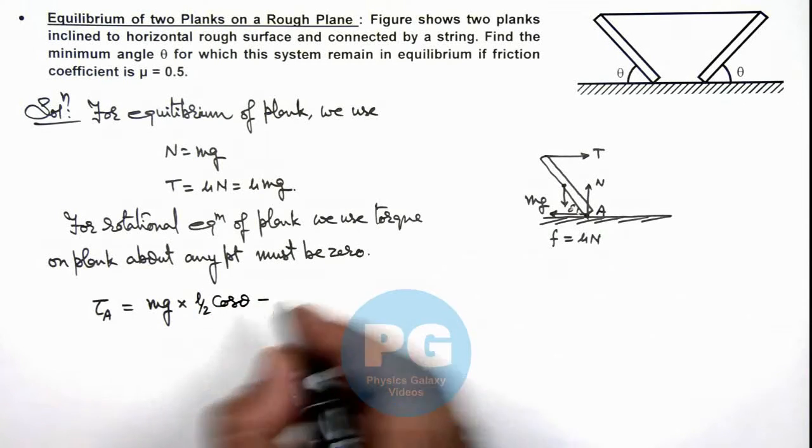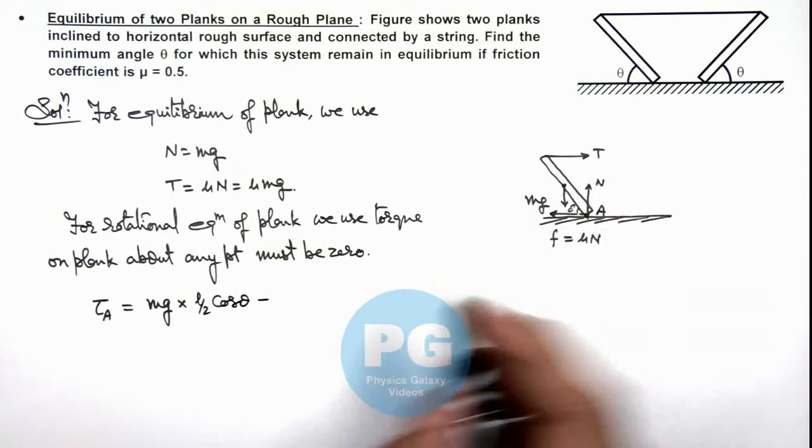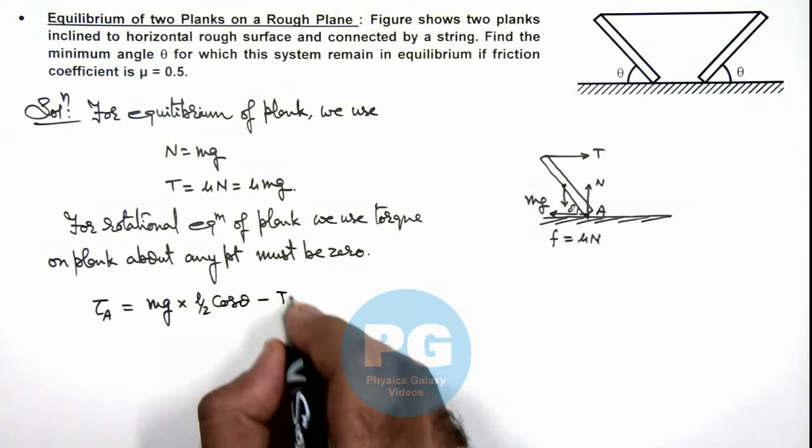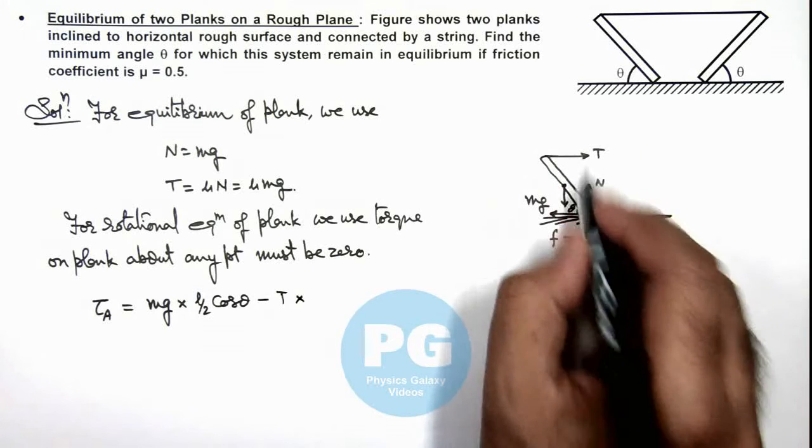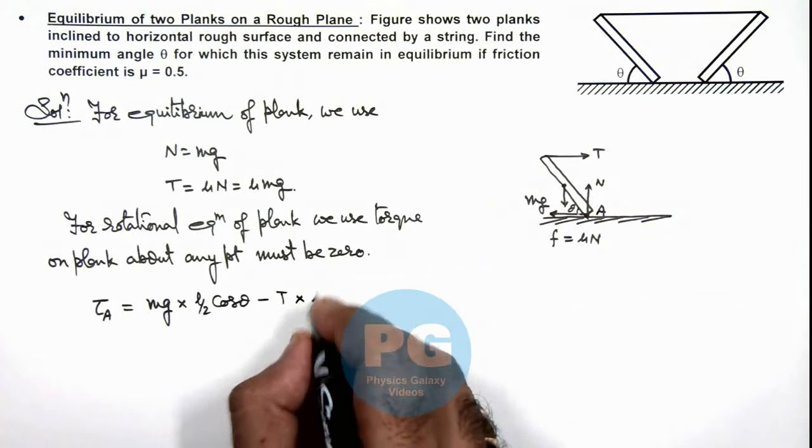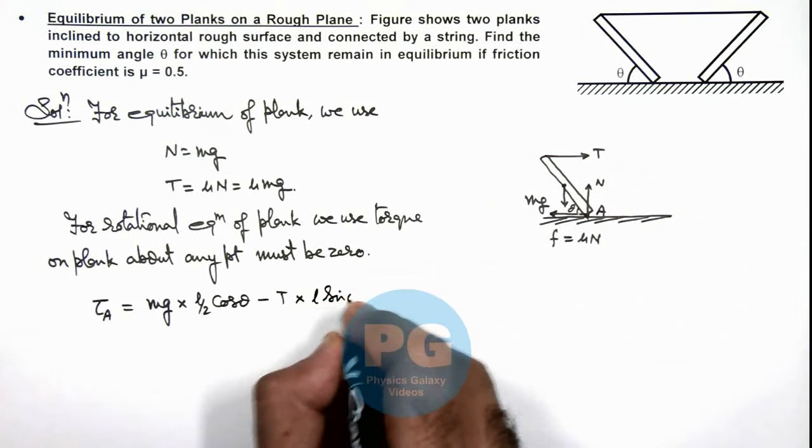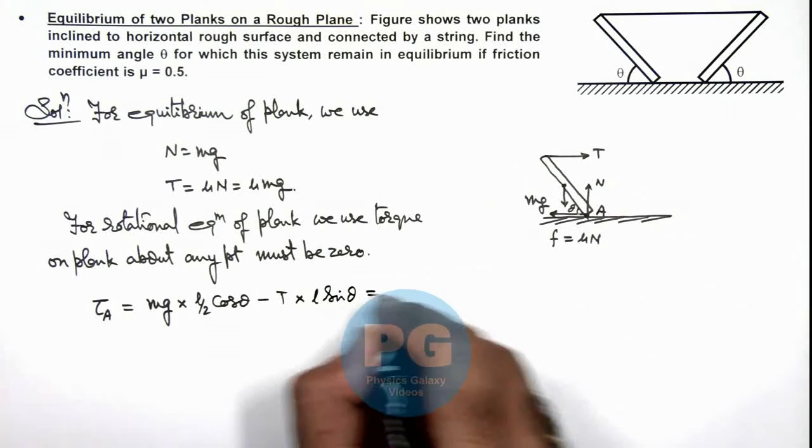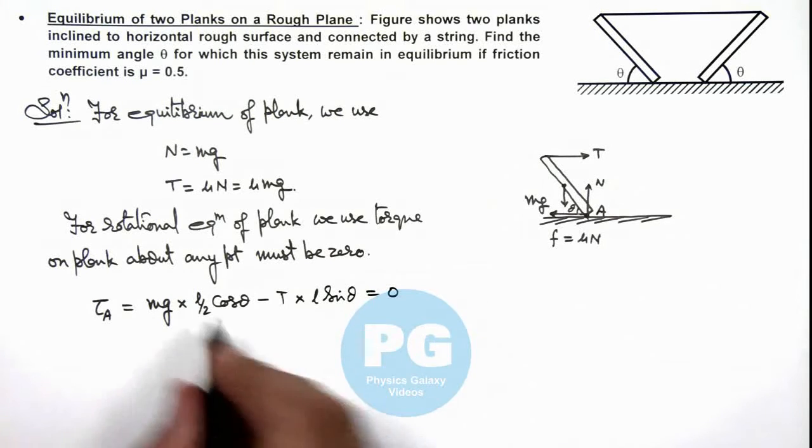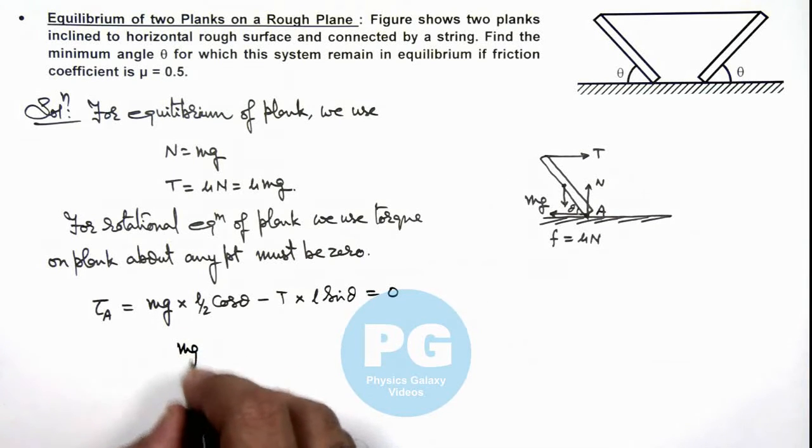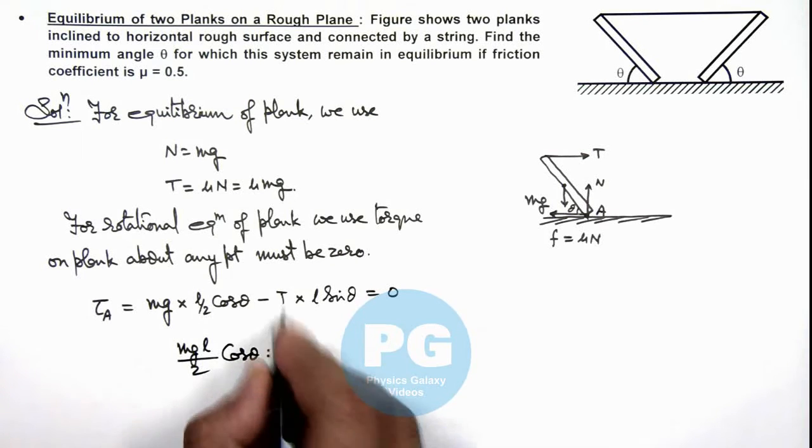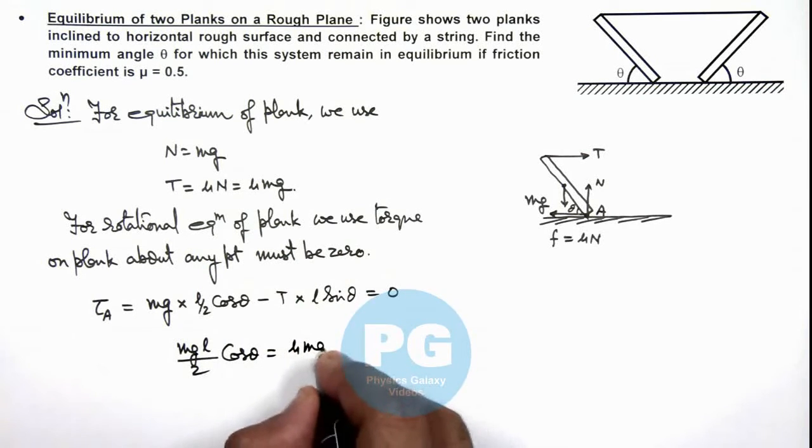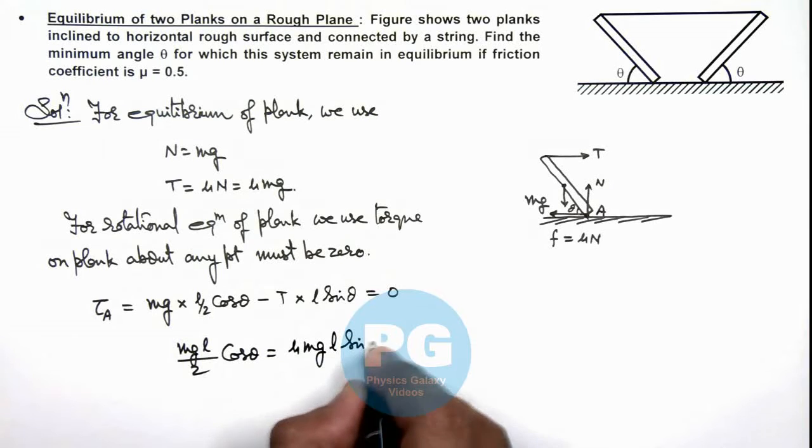And minus the torque due to tension we can write as T multiplied by the perpendicular distance of the line of tension from A, that is l sin θ, and this should be equal to zero. Here if we substitute the values, mg l by 2 cos θ should be equal to the value of tension we write as μmg l sin θ.